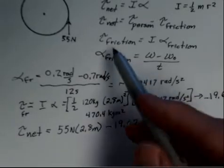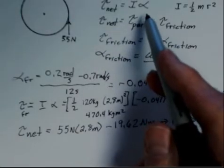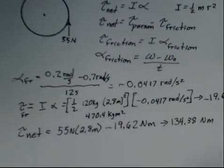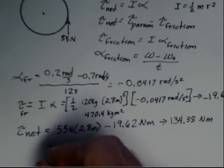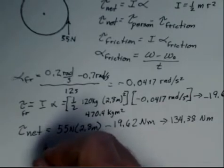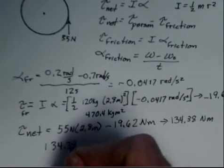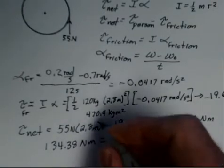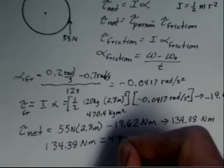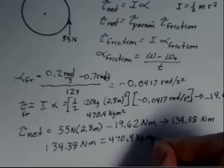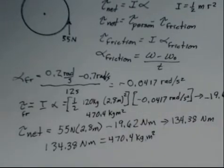Now we want to use that net torque and calculate the alpha for the case when the person is pushing. We're going to use net torque equals I times alpha. So our net torque, 134.38 newton meters. Our I is the 470.4. We'll just consider the person pushing but not putting any of their mass into the rotation. This is focusing on just the merry-go-round.